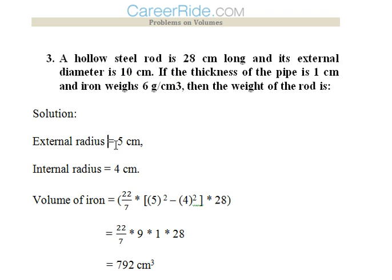So this would be r1, this would be r2. So to find the volume, the formula here would be pi r1² minus r2² into 28. That is the length of the hollow steel rod. So we get the volume as 792 cm³.